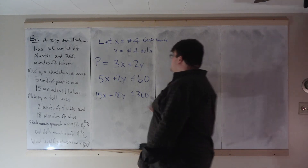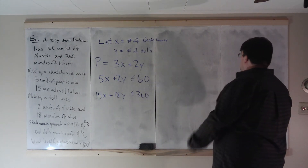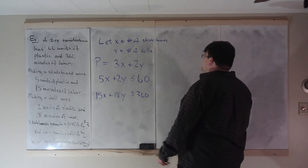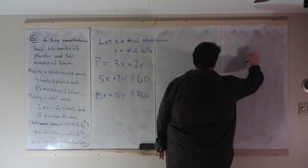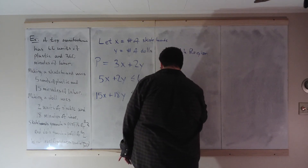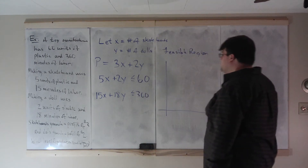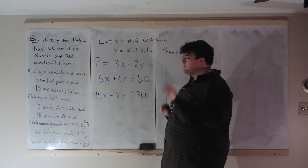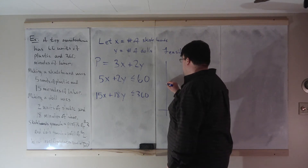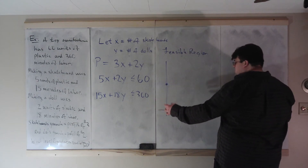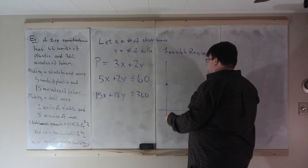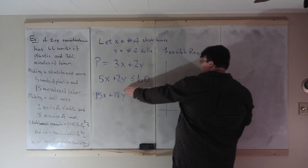We can immediately find three equations. The profit equation: each skateboard gives $3, each doll gives $2, so profit equals 3x plus 2y. The plastic constraint: each skateboard uses 5 units, each doll uses 2 units, so 5x plus 2y is less than or equal to 60. The labor constraint: each skateboard uses 15 minutes, each doll uses 18 minutes, so 15x plus 18y is less than or equal to 360.